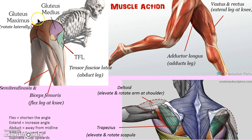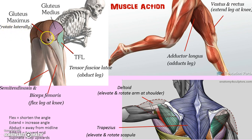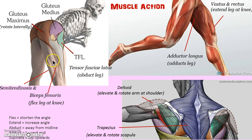Continuing this muscle fiber idea, look at the glutes — they come at a slanting angle, and so that tells you these gluteus muscles are going to rotate the leg laterally. Whereas the tensor fascia runs straight down the hip, so it's going to bring the leg outwards. You can see how these muscle fibers start to tell you what's going on.